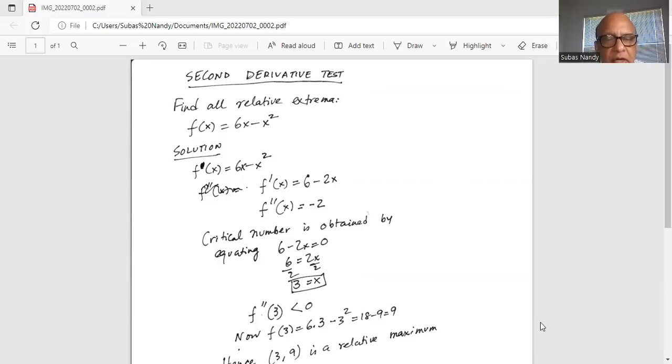Critical number is obtained by equating 6 minus 2x equal to 0. So divide by 2 on both sides. 6 by 2 is equal to 2x by 2, so x is equal to 3.